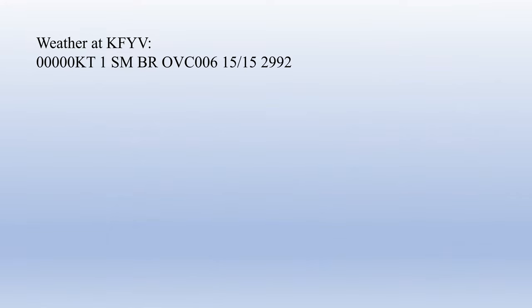The weather at Drake Field is reported as calm winds, one mile visibility and mist, ceiling of 600 overcast, temperature and dew point of 15 degrees C, and altimeter of 2992. We'll assume that we filed an alternate for the flight and that it is a legal alternate.